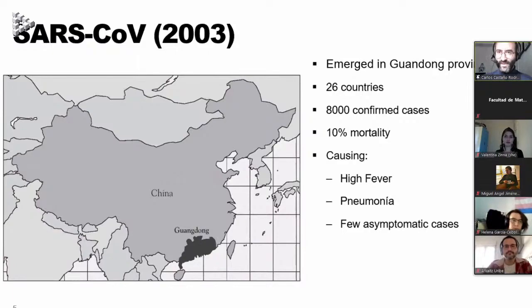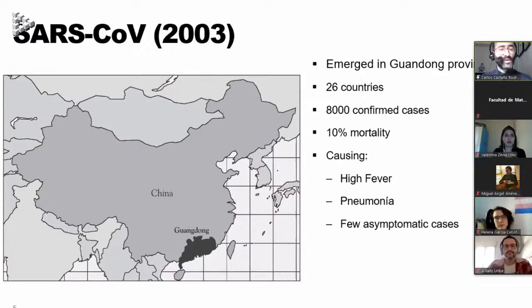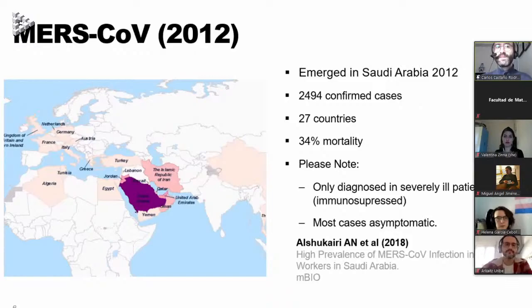First, SARS coronavirus, which emerged in 2003 in Guangdong province, China, and rapidly spread to 26 countries, causing 8,000 confirmed cases with 10% mortality. This virus caused high fever and pneumonia, and very few asymptomatic cases. So everyone who got infected became very ill and stayed at home or was admitted to the hospital.